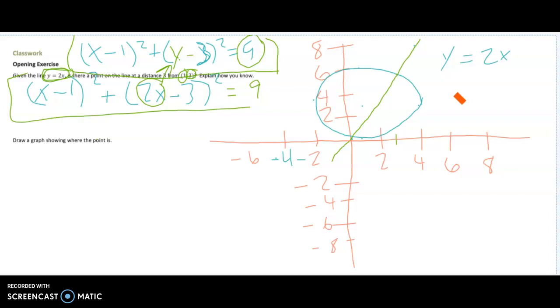Well here is (1,3). A distance 3 away from that would basically be a circle that is 3 away from that point. So here I've drawn a circle all the way around it with a radius of 3.